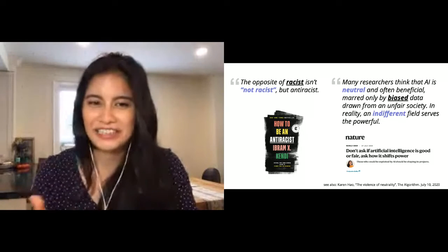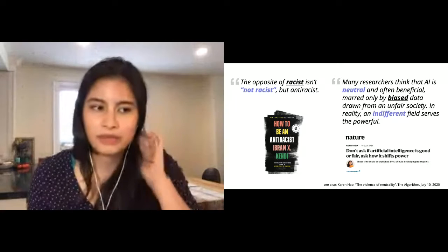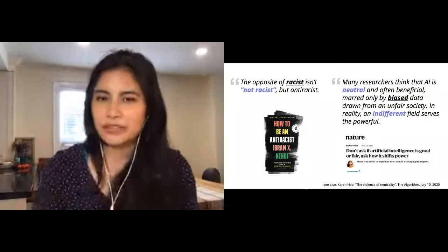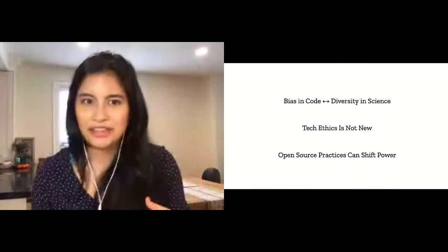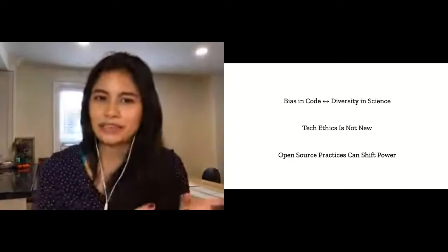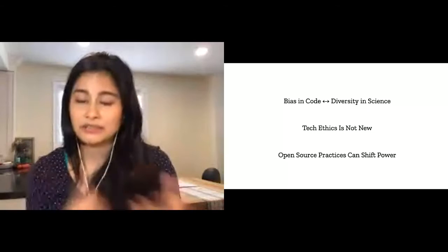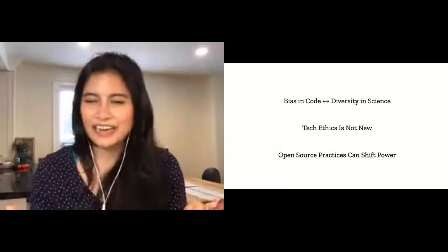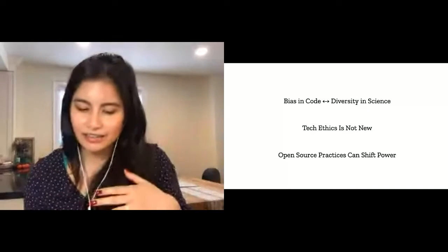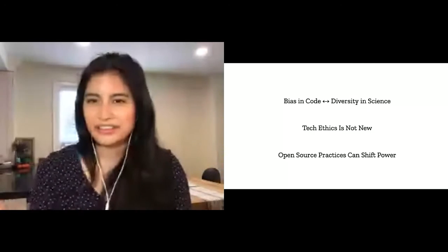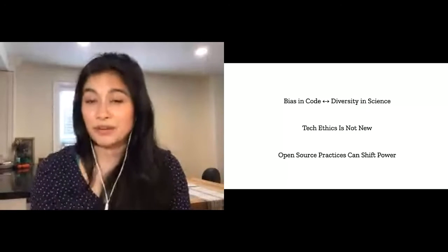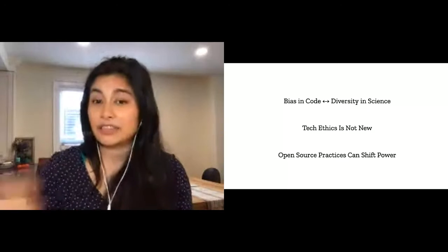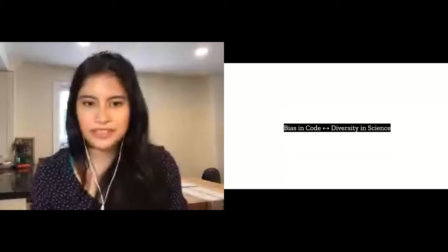I'm not the first person to see this connection. Karen Howe talks about it in her newsletter, The Violence of Neutrality from the Algorithm. Today I want to explore this idea of shifting power in the tech that we're building. We're going to talk about three things. First, looking at a few examples of how bias in code is affecting diversity in science and how diversity in science is affecting bias in code. Second, we'll talk about how tech ethics is not new. It's been exciting to see ethics come up in all the keynotes so far, from the time it takes to work with an IRB to the Hippocratic Oath for scientists with the practice talk yesterday.